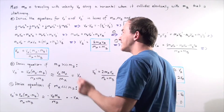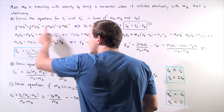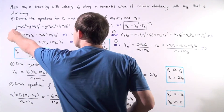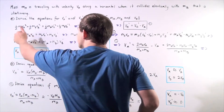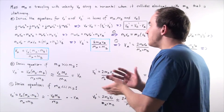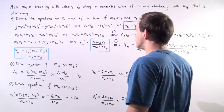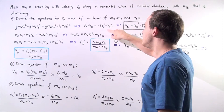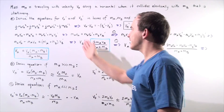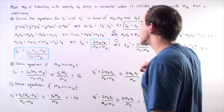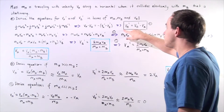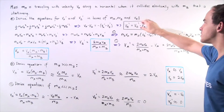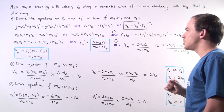Since the initial velocity of object B, VB, is zero, that entire term goes to zero. We can multiply the entire equation by two and cancel out the halves. After rearranging, we get: VA minus VB equals negative of VA prime minus VB prime. Since VB is zero, those terms cancel, and we can rearrange to get VA prime equals VB prime minus VA. Let's label this as equation one.